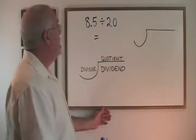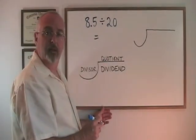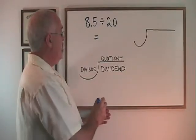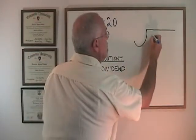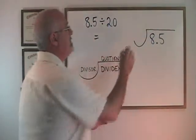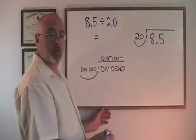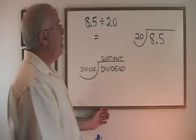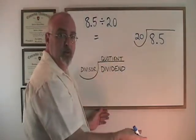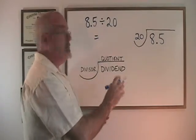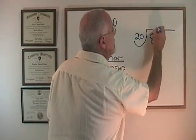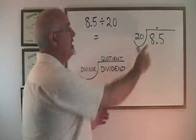In this example, my dividend has a decimal in it already: 8.5 divided by 20. But I set up my division in the same way. 8.5 is the dividend, so it goes here. 20 is the divisor, it goes here. And my answer, the quotient, will go on top. The first thing I do is check to make sure the decimal is in the right place in my divisor. The decimal is after the zero in 20, which means it's in the right place, so I don't have to move the decimal in the dividend. The answer's decimal will therefore appear right above the decimal in the dividend.